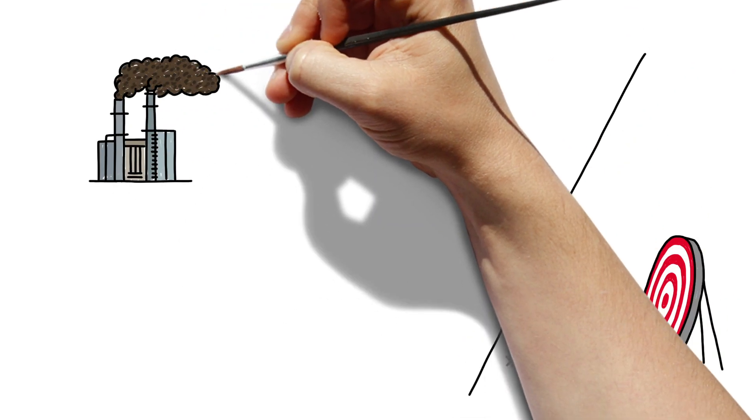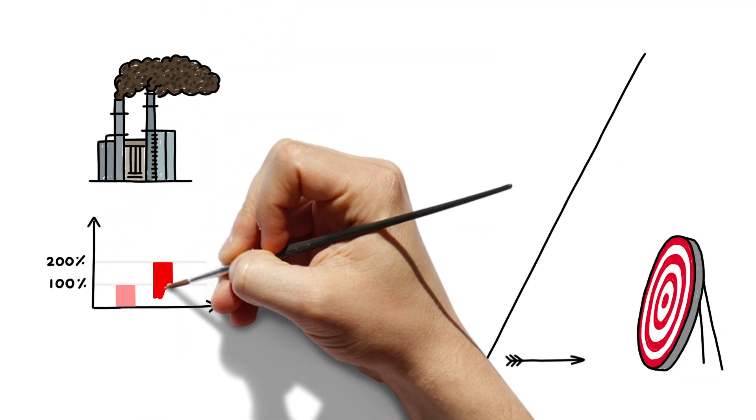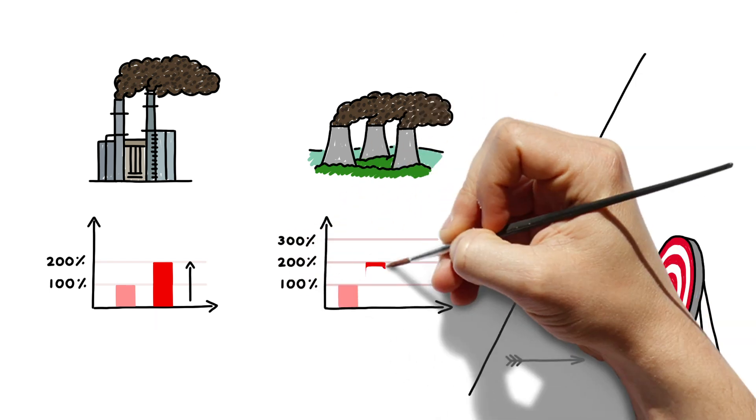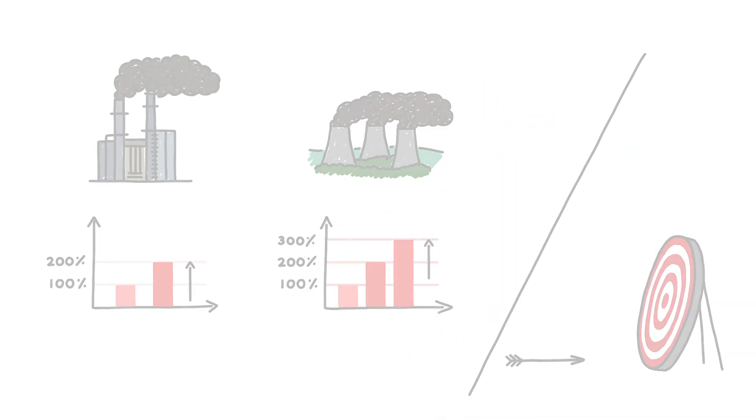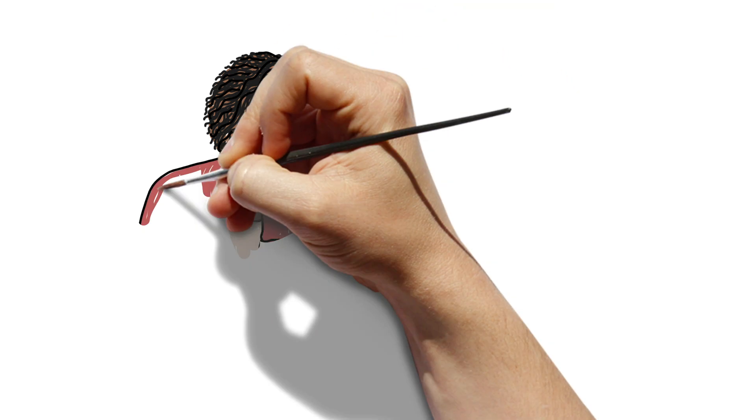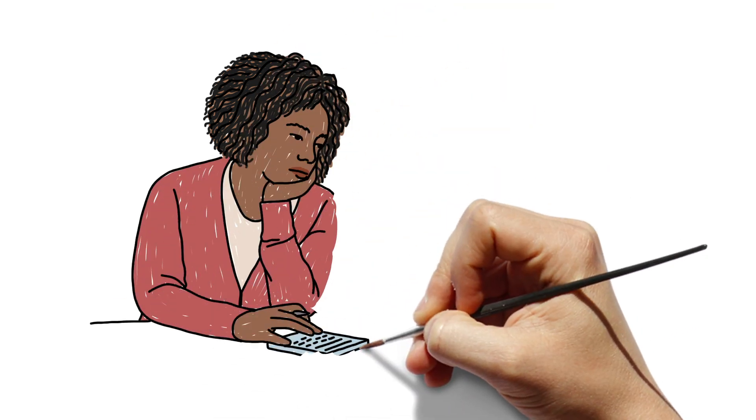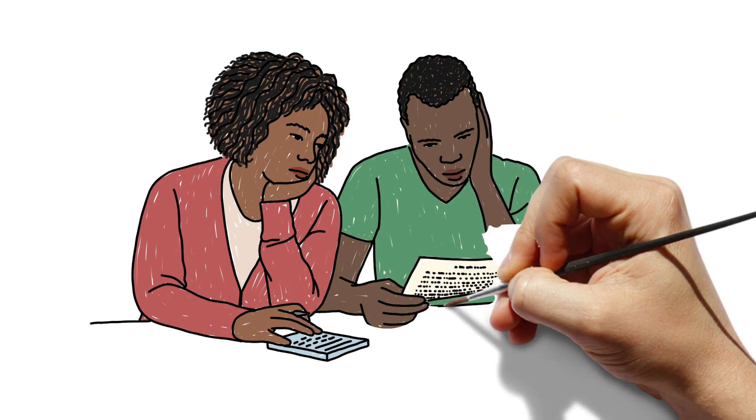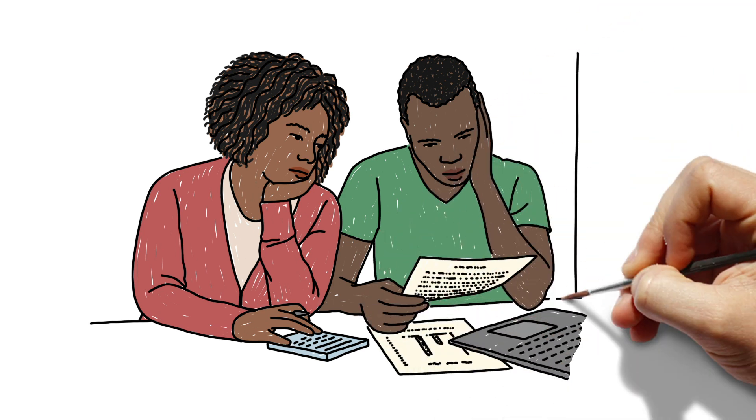But how effective would this dirty energy pathway be in meeting our goals? It would double the cost of generating electricity in gas power plants and triple the cost in coal plants. That's about $2,500 every year for every household in western Pennsylvania, which we and other Americans would pay through higher taxes and utility bills.